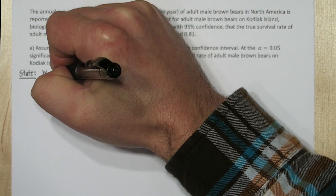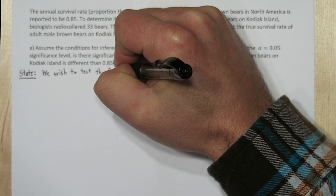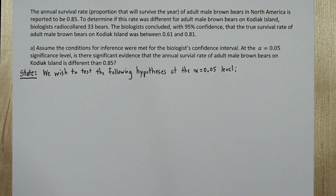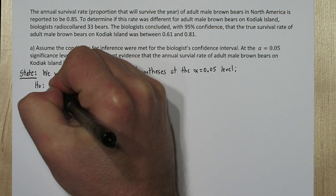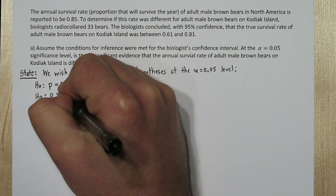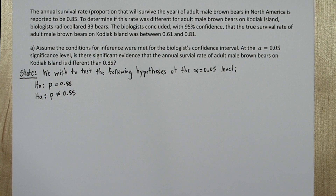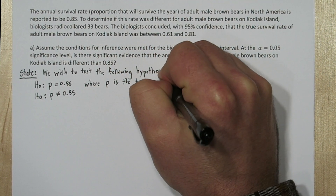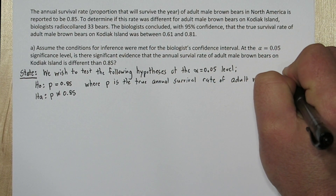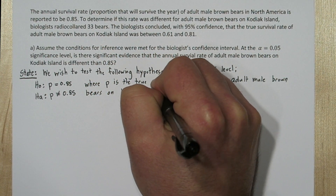We're going to use the four-step solving process. For the state step, we wish to test the following hypotheses at the alpha equals 0.05 level. The null hypothesis is that p equals 0.85, and the alternative hypothesis is p is not equal to 0.85. This is called a two-sided hypothesis test, because we're interested in whether p is greater than 0.85 or less than 0.85. We also need to define p — p is the true annual survival rate of adult male brown bears on Kodiak Island.